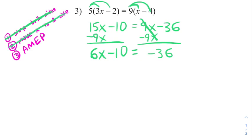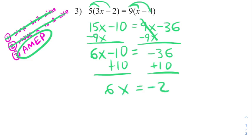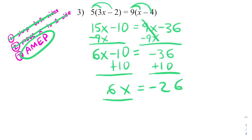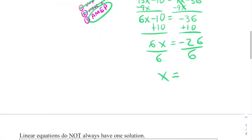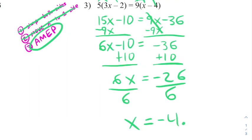And now we can solve using AMEP. I'll add ten to both sides, and get six x equals negative twenty-six. And then I'll divide both sides by six, giving myself a decimal answer of x equals negative four point three repeating. We'll just call it negative four point three three.